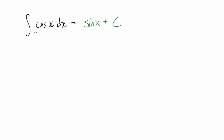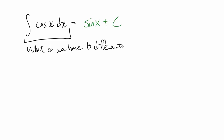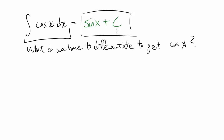And why is it sine of x? Because this is asking you: what do we have to differentiate to get cosine of x? And you know the derivative of sine of x is cosine of x. So the answer is sine of x plus some constant, because the derivative of a constant comes out to be 0.